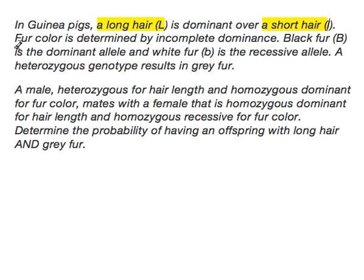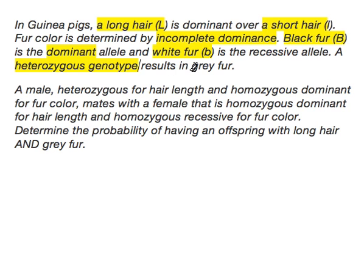Fur color is the other trait we're talking about, and it is determined by incomplete dominance — that is important. So you have to know what incomplete dominance is; if you need to look back at the previous chapter, go ahead and do that. For hair color, black fur is dominant over white fur, which is recessive. However, a heterozygous genotype, big B little b, results in gray fur.